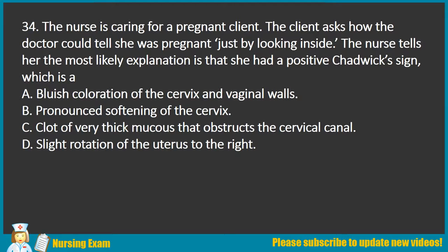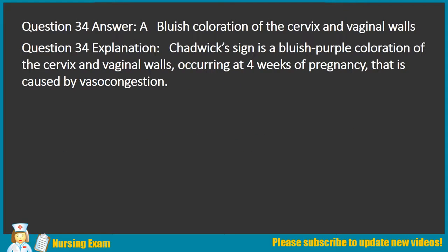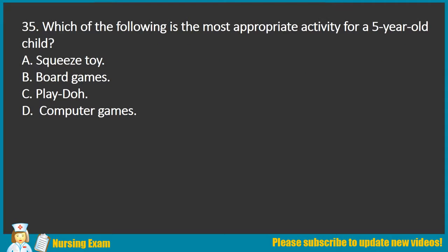Question 34. The nurse is caring for a pregnant client. The client asks how the doctor could tell she was pregnant just by looking inside. The nurse tells her the most likely explanation is a positive Chadwick's sign, which is: A. A bluish coloration of the cervix and vaginal walls. B. Pronounced softening of the cervix. C. A clot of very thick mucus that obstructs the cervical canal. D. Slight rotation of the uterus to the right. Answer: A. A bluish coloration of the cervix and vaginal walls. Explanation: Chadwick's sign is a bluish-purple coloration of the cervix and vaginal walls, occurring at 4 weeks of pregnancy, caused by vasocongestion.